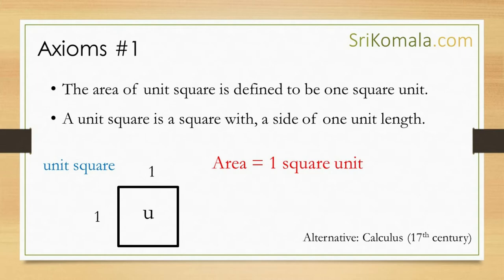Actually, the area of a unit square can be proven using calculus, which was developed by Isaac Newton around the 17th century. On the other hand, the postulation of this axiom was developed in the era of ancient Greece. Thus, the discussion using calculus is for another day.